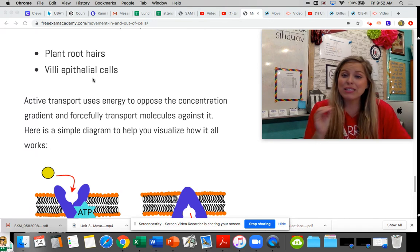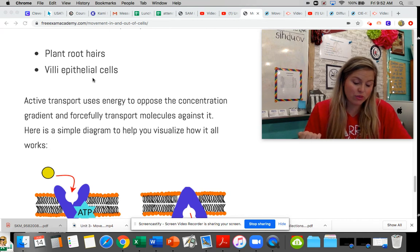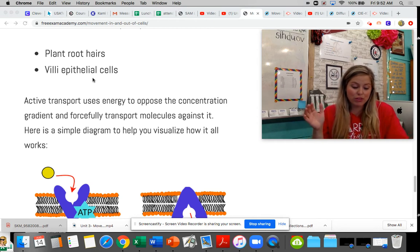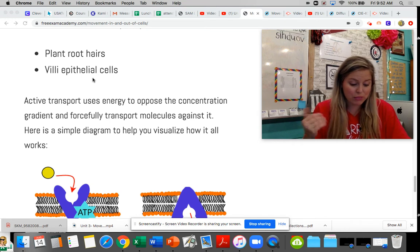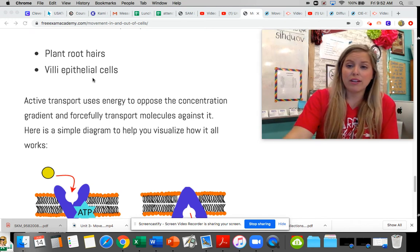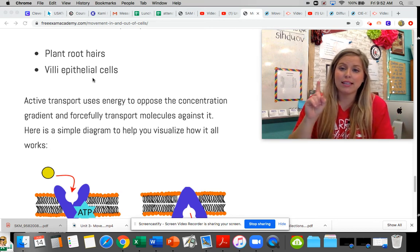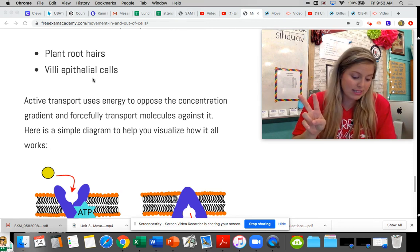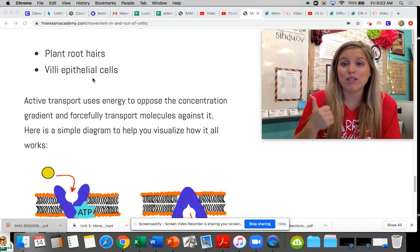Here we typically use active transport transporting glucose molecules. For the small intestine, it's from the small intestine into our blood plasma, and with our kidney tubules it is ultimately filtered from the tubule into our blood capillaries. So this active transport for humans takes place in the kidneys as well as the small intestine, and for plants in the root hair cells.